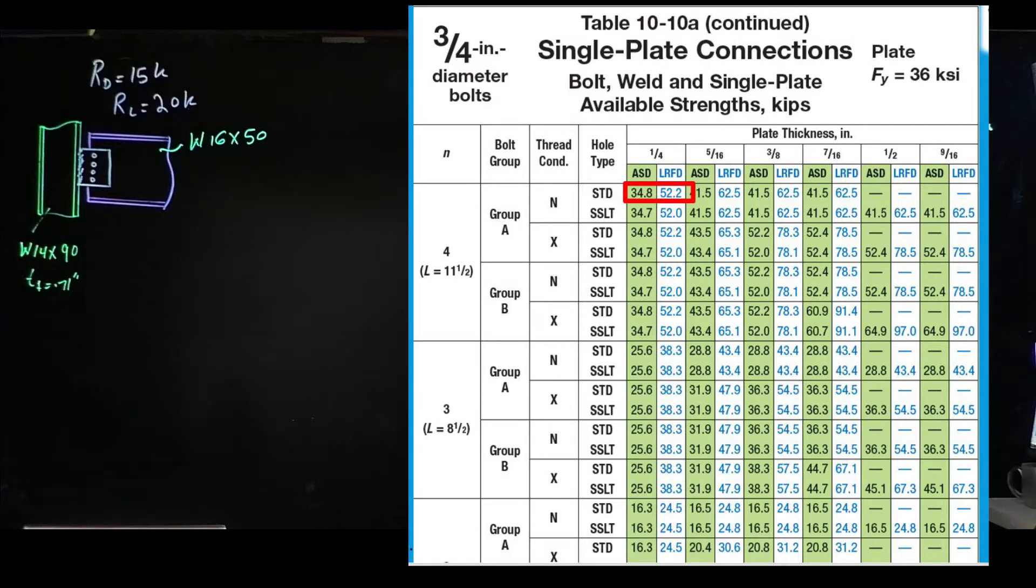We're going to use a 1/4 inch plate here. We're going to see that LRFD is 52.2 kips and ASD is 34.8.